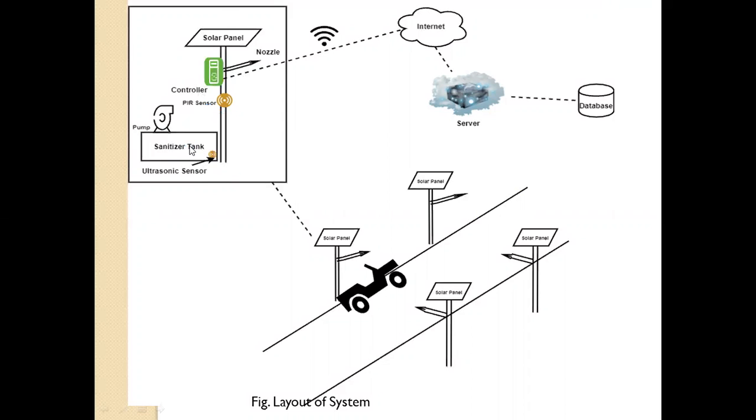We can fill sanitizer inside this tank up to 2000 liter. We can use solar energy to pump that sanitizer with help of pump. Then there is one ultrasonic sensor, this ultrasonic sensor is used to detect level of sanitizer inside the tank.